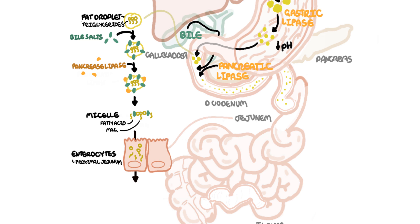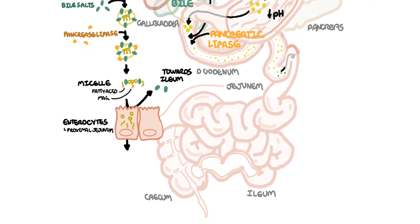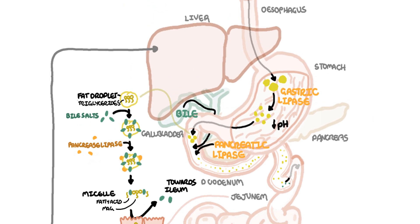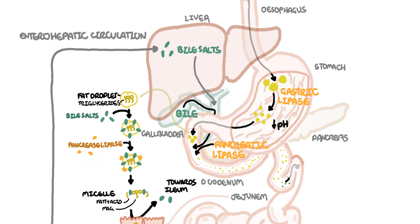The bile salts themselves remain in the intestinal lumen because they do not get reabsorbed here. They actually reach the terminal ileum where they are actively reabsorbed and enter the portal circulation into the liver. This cycle is known as the enterohepatic circulation — entero as in intestine, and hepatic as in liver — where the bile salts are essentially recycled and resecreted into bile to be used again.